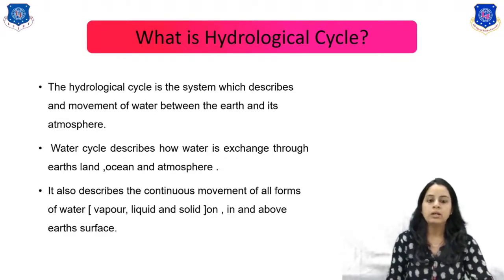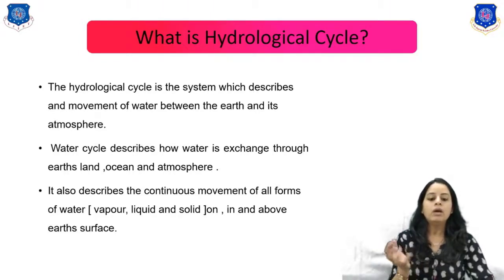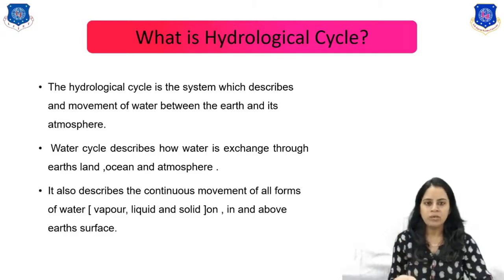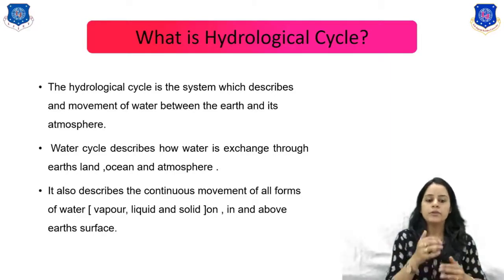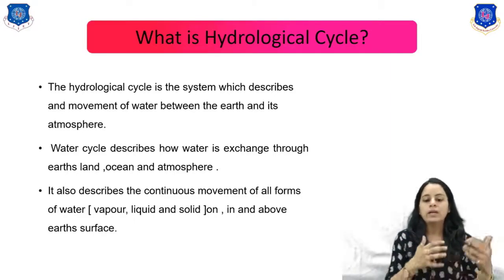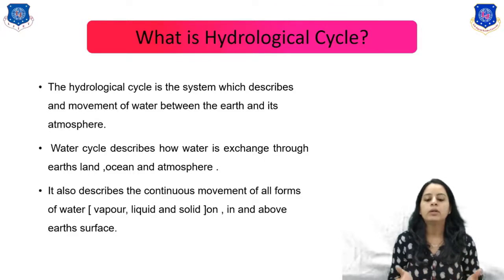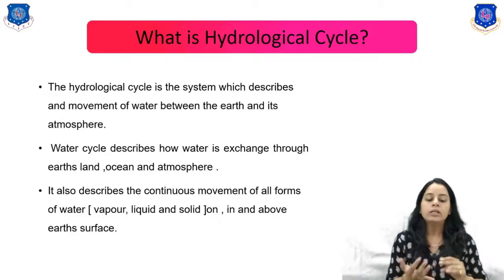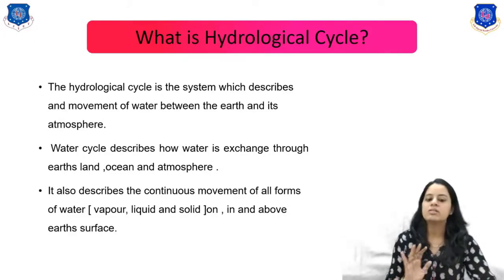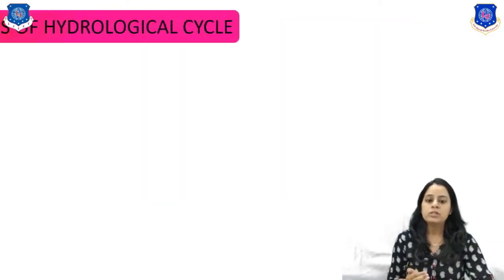The hydrological cycle is also called the water cycle. It describes the movement of water between the Earth and its atmosphere. It also describes how water moves through the Earth's land and ocean into the atmosphere, as a continuous movement of water in all forms — vapor, liquid, and solid — on and above the Earth's surface.